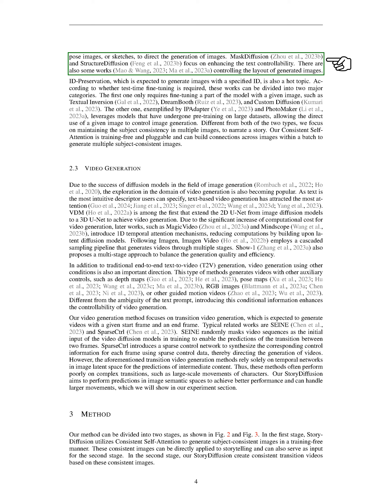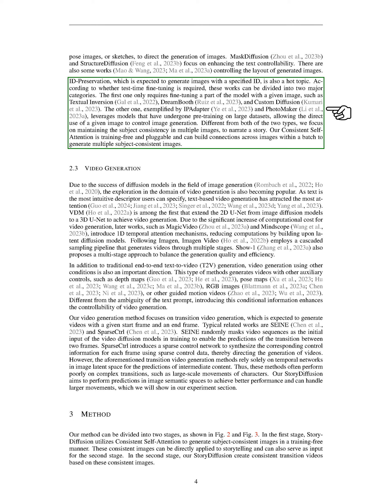On the other hand, mask diffusion and structure diffusion focus on improving text control. Some methods also concentrate on controlling the layout of generated images, such as ID preservation, which aims to create images with specific IDs. These methods can be categorized based on whether they require fine-tuning during testing. Some methods, like textual inversion and DreamBooth, only need partial fine-tuning with a given image. Others, like IP Adapter and Photomaker, utilize models pre-trained on large datasets, enabling direct image usage for controlling image generation.